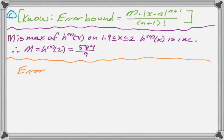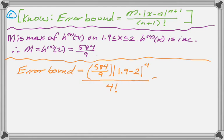So plug it in, so that's m, and then it'll be the absolute value, and that's going to be 1.9, which is where you're evaluating the polynomial, minus 2, which is the center, to the fourth. Since we stopped at 3, we're using 4 here, over 4 factorial. And that's approximately this, obviously by calculator. And you can see that that's less than what it's supposed to be less than. So we must have done it right.